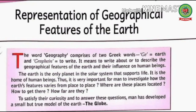Now students, come to page number 9 of your book: Representation of Geographical Features of the Earth. Here, representation means description and geographical features means it consists of both man-made and naturally created features of the earth. The word geography comprises — means consists of — two Greek words. G means earth and graphene means to write. Underline the word comprises, means consist of.